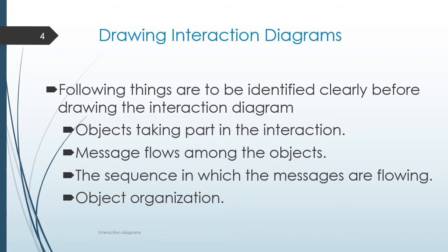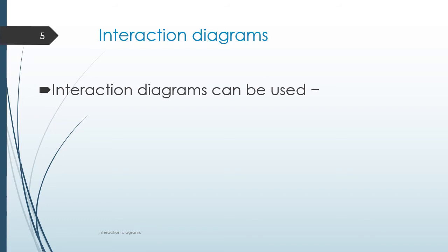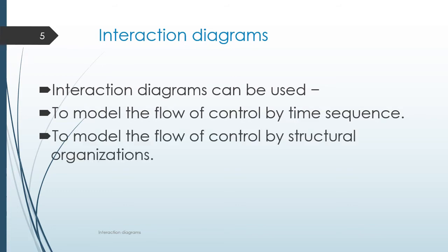Interaction diagrams model the order of messages flowing over all objects and their organization. Interaction diagrams can be used to model the flow of control by time sequence using the sequence diagram, or to model the flow of control by structural organization using the collaboration diagram.